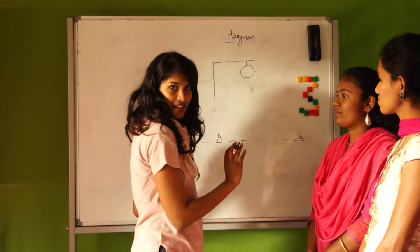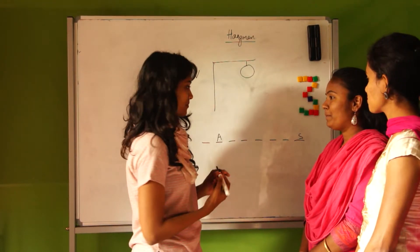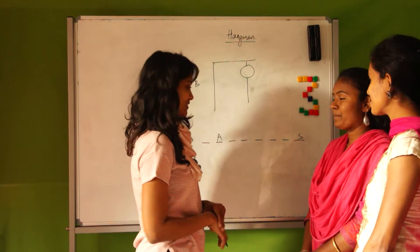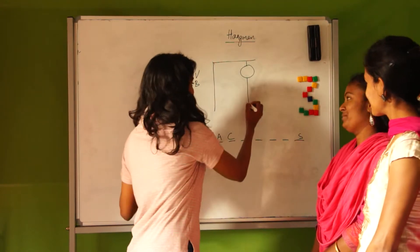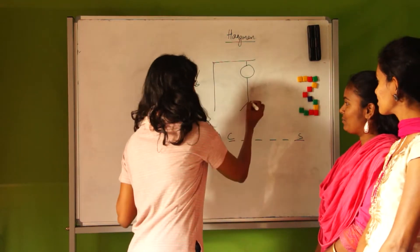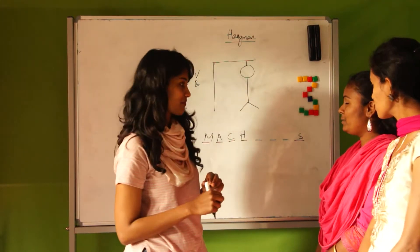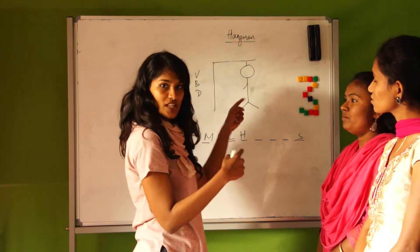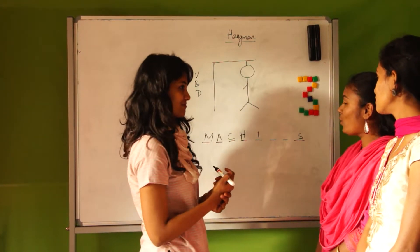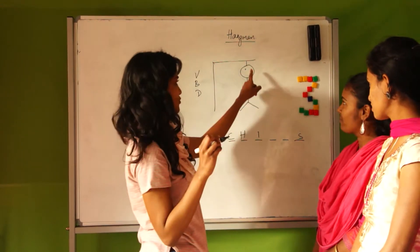For the first wrong guess 'V,' there is no V in the word 'machines,' so you write it and start drawing the person. Someone guesses 'C' — there is a C. Then 'W' — no W, so you draw the body. Then 'J' — no J. Then 'H' — there is an H. Then 'D' — no D. Then 'I' — there is an I. Then 'O' — no O. Then 'X' — no X. Now they only have three more chances left because they have to draw the face and then it's done.